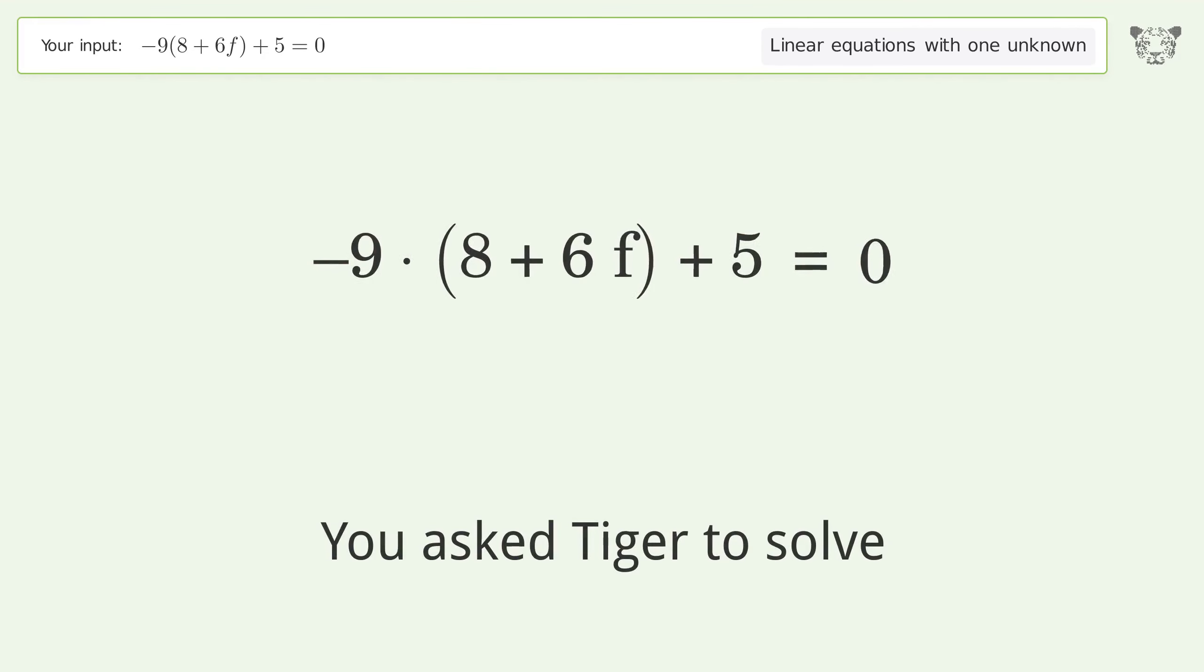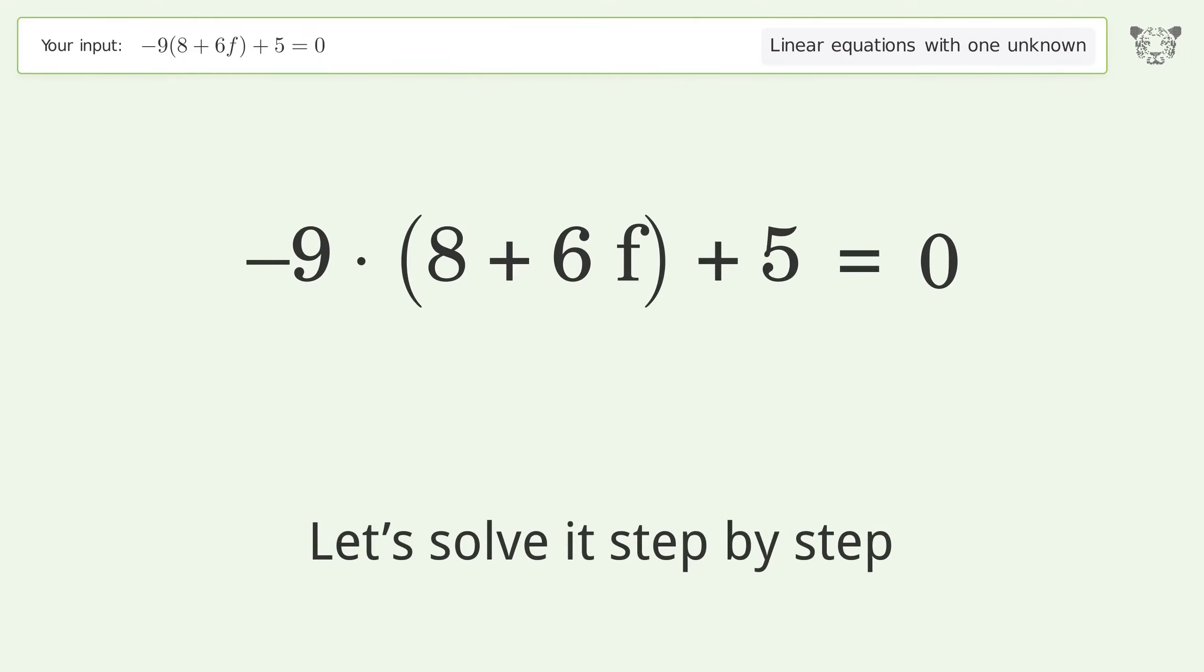You asked Tiger to solve this. It deals with linear equations with one unknown. The final result is f equals negative 67 over 54. Let's solve it step by step.